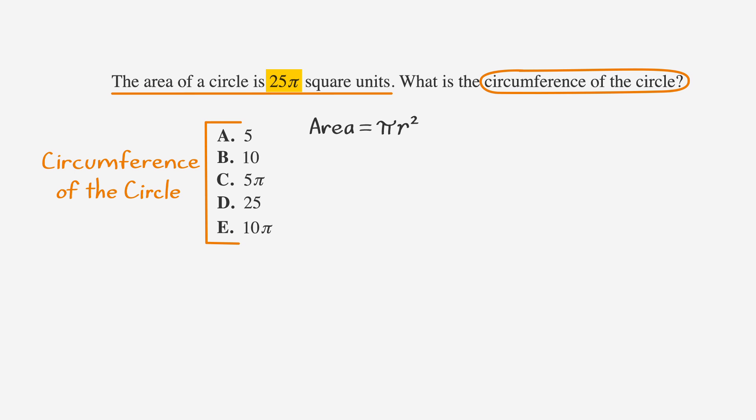We know the area, or 25 pi, is equal to pi r squared, so we can find the radius by dividing by pi, and then taking the square root of both sides to find that the radius is 5.